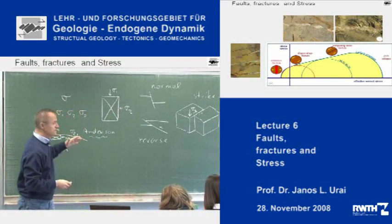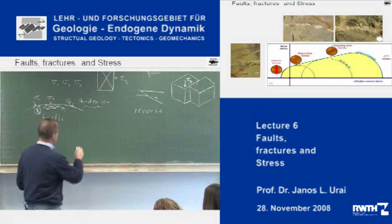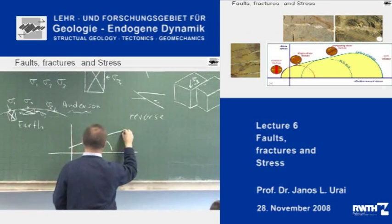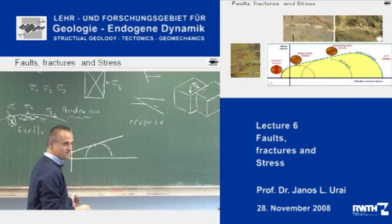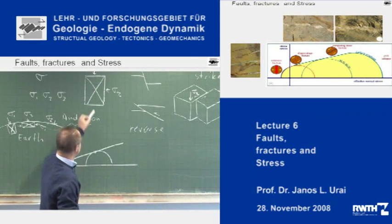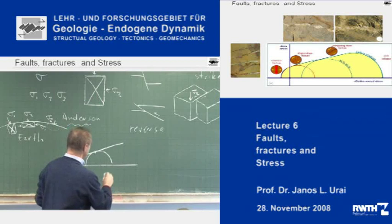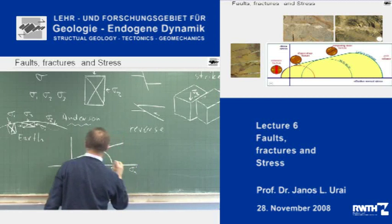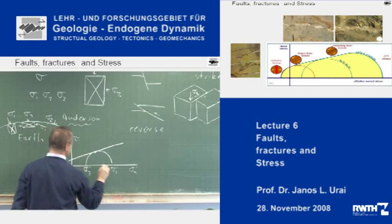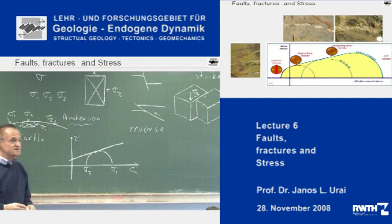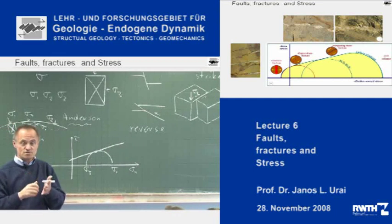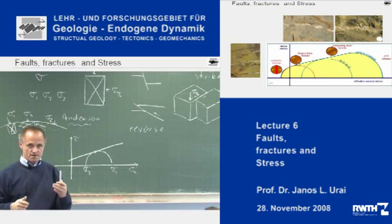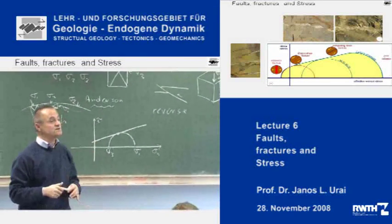Under compressive stress, as explained by the Mohr diagram, rocks will fail and form faults. This plane is one of the two conjugate planes, with sigma 1 and sigma 3 as the effective stresses, and normal stress and shear stress on the axes. This explains faulting and the generation of faults in the very large brittle parts of the earth's crust. However, there is still one mode of failure which this diagram has not yet explained.